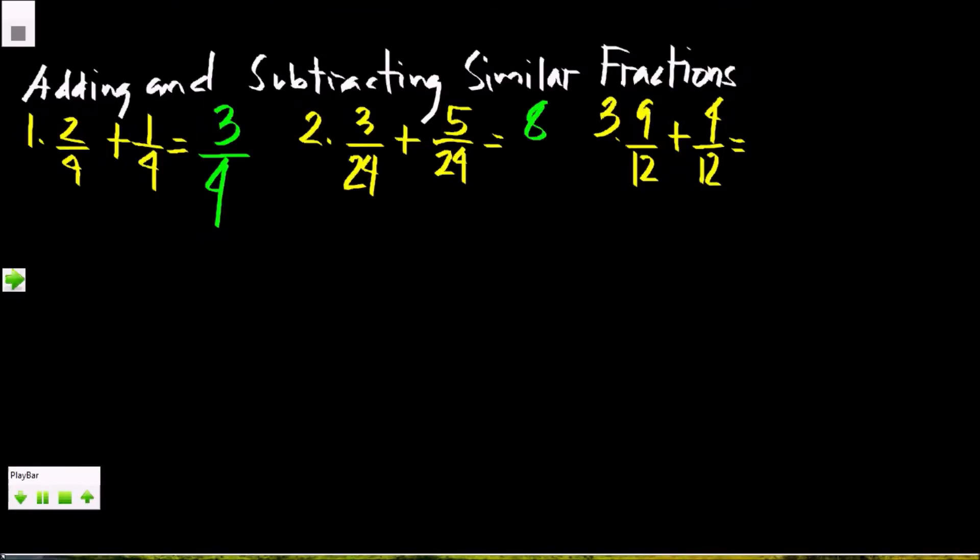3 plus 5 is 8, copy the denominator 24. 8/24 is simplified. The numerator and denominator can be divided by a greatest common factor which is 8. 8 divided by 8 is 1, 24 divided by 8 is 3, so the answer is 1/3.